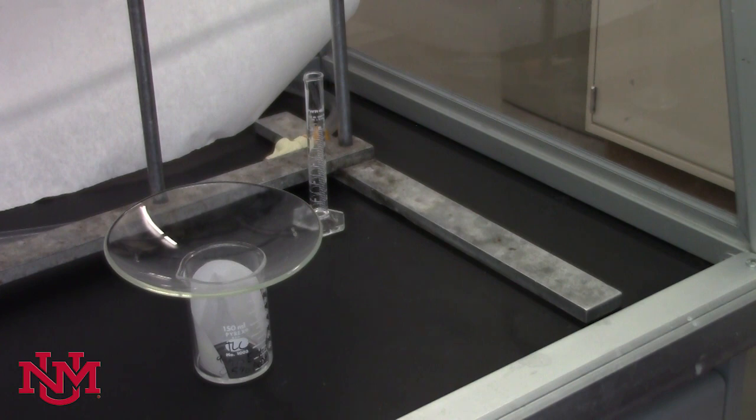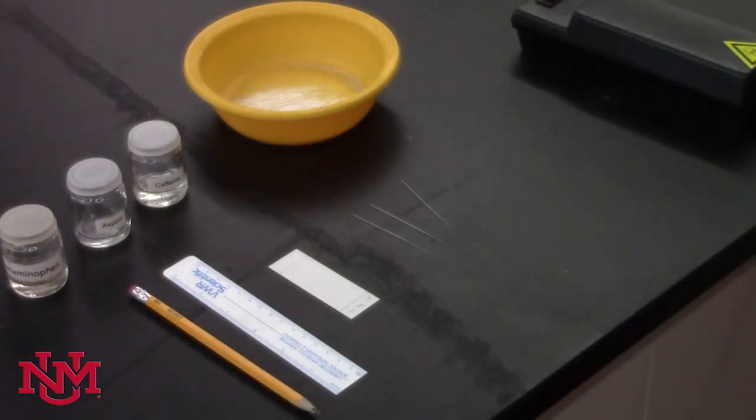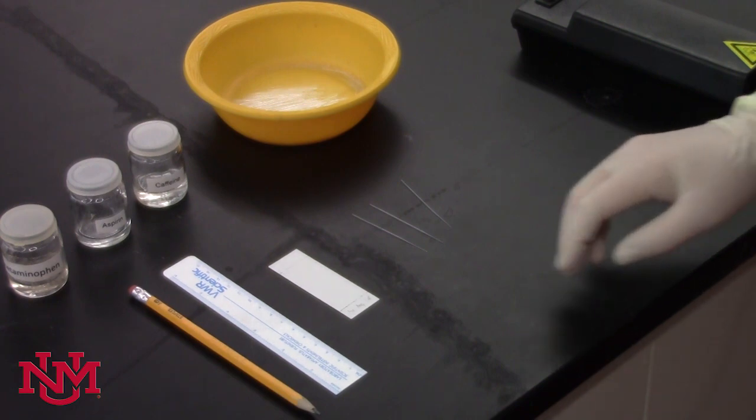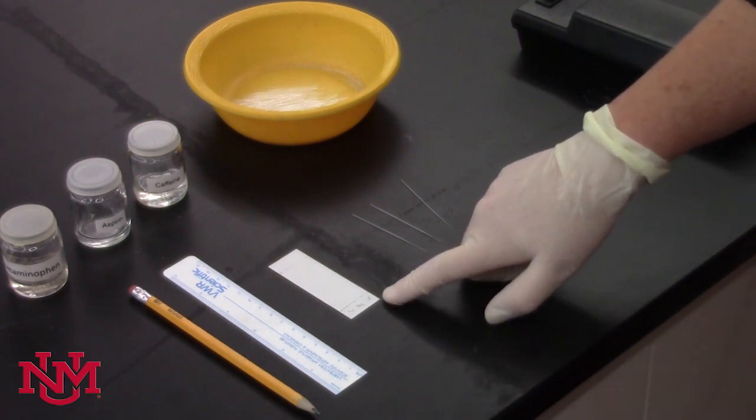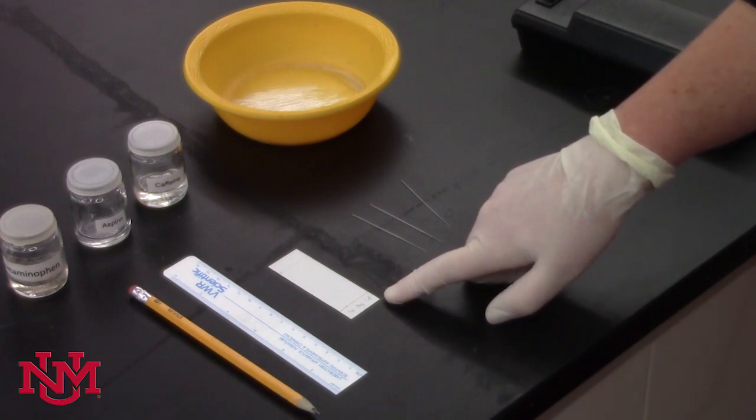The next step is to prepare your TLC plate for the developing chamber. To carry out a TLC analysis, you'll need a TLC plate which has a solid support coated onto plastic in this case, and it's made of alumina.